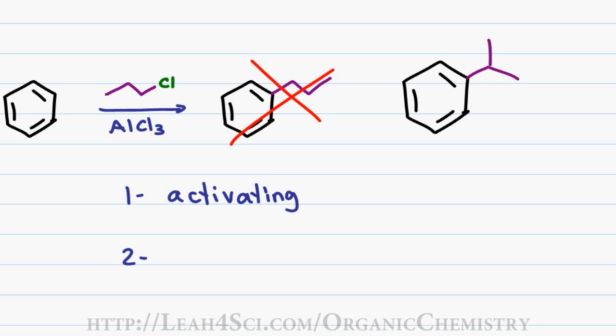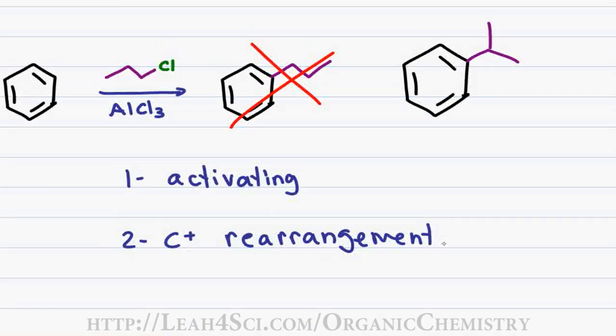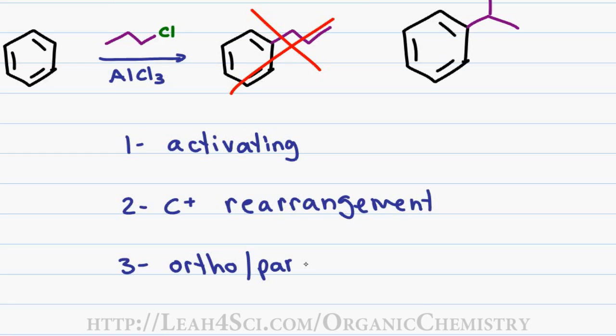A second drawback as we saw here is a carbocation rearrangement. And finally, alkyl groups are ortho-para directing, and while this may not be a drawback, this is something you want to keep in mind if perhaps you want to do a reaction with a meta substituent instead of ortho-para.